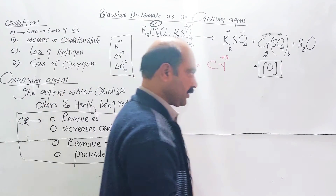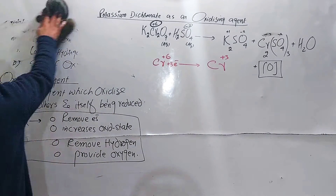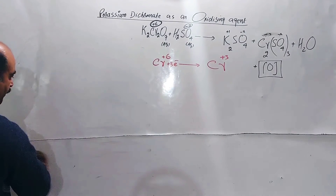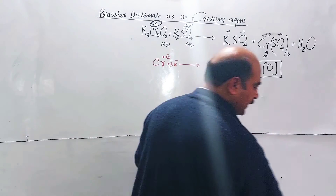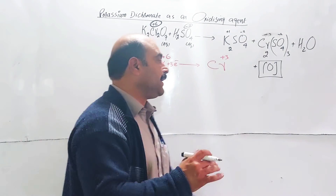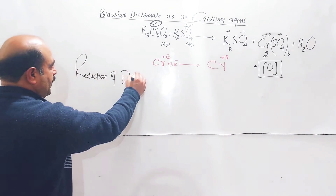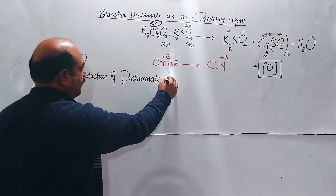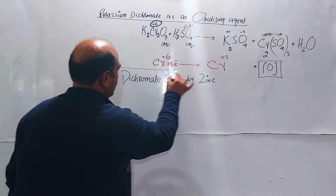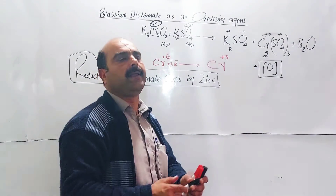The overall reaction: the important thing is that in acidic medium, the oxygen provided is atomic oxygen — the oxygen provider is the oxidizing agent. Chromium goes from plus six state to plus three state. For example, the reduction of dichromate ions by zinc. Potassium dichromate oxidizes zinc, and the dichromate ion is reduced. Clear?